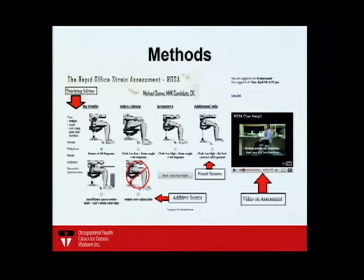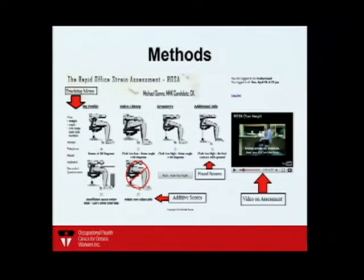The original version of ROSA was a pen and paper checklist. The first ErgoTools iteration had people watch a YouTube-hosted video to get information on how to adjust their workstation, make those adjustments, and then go through their full assessment. Fixed scores allow only one selection, while additional scores can be added on top.